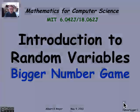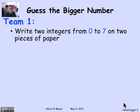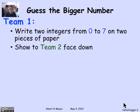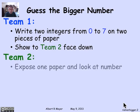We're going to play the bigger number game. There are two teams. Team one has the task of picking two different integers between 0 and 7, inclusive. They write one integer on one piece of paper and the other integer on the other piece of paper. They turn the two pieces of paper face down so the numbers are not visible. The other team then sees these two pieces of paper sitting on the table and picks one, turning it over to look at the number on it.